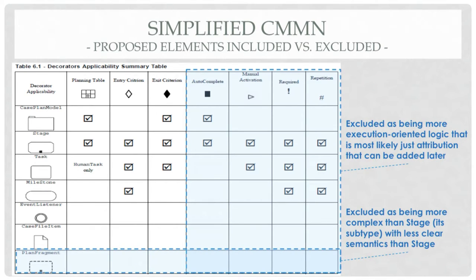Next, I'm going to get rid of all the notational attribution — not because it's not important, but if I'm trying to get the business analyst to just focus on what has to happen, let them just do that. Then when you go to execution, you can add these attributes — in particular, the required flag. In CMMN you really have tasks that are enabled — automatically enabled by default — but you do have this manual activation possibility. They only become required if you actually flag them that way, and only become discretionary if you flag them that way. We're going to keep 'discretionary,' which is not a notational marker but a shape marker.